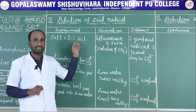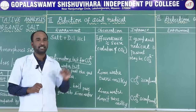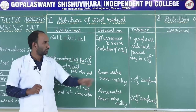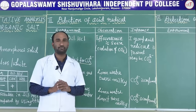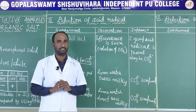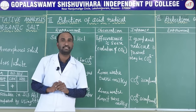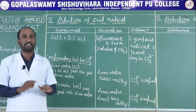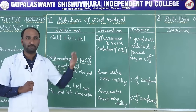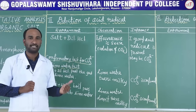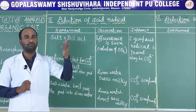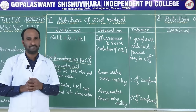Both confirmatory tests are complete. The acid radical identified is CO3²⁻ — carbonate. Detection of acid radical is over. Preliminary test and acid radical detection are complete. Now proceed to the third step: detection of the basic radical.